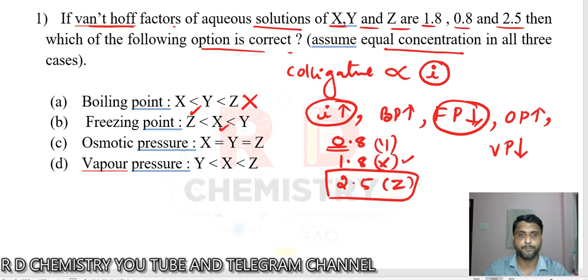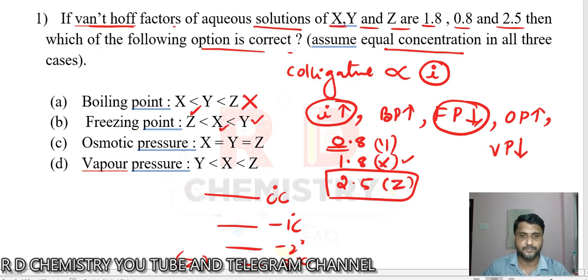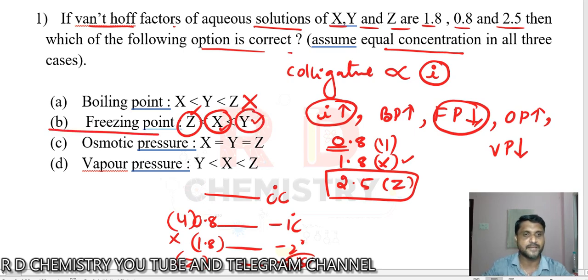Freezing point of Z is very small, correct. As the i value increases, freezing point decreases. Maximum decrease for the largest value 2.5, that is Z. Next highest decrease for X (1.8), minimum decrease for Y (0.8). Which means suppose I have 0 degrees Celsius, it can be minus 1, minus 2, and minus 3 degrees. So the second one is a correct statement.